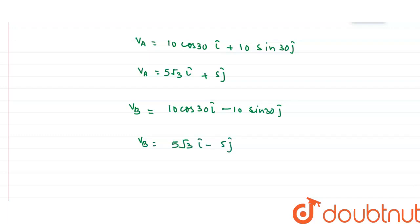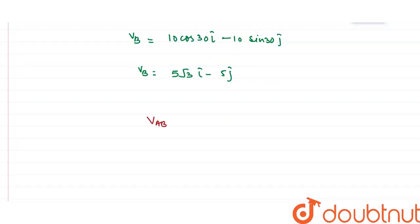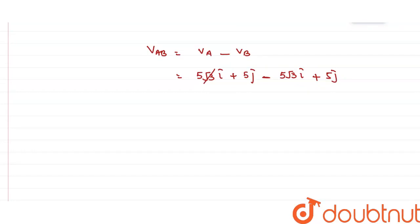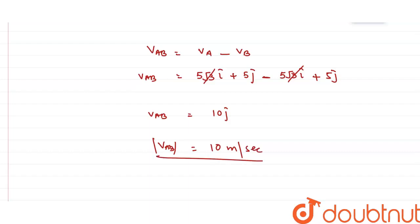To calculate the relative velocity of A with respect to B, V_AB = V_A − V_B. Substituting: (5√3 i-cap + 5 j-cap) − (5√3 i-cap − 5 j-cap). The 5√3 i-cap terms cancel out, leaving 5 j-cap + 5 j-cap = 10 j-cap. So the relative velocity is 10 j-cap, and in magnitude it is 10 meters per second.